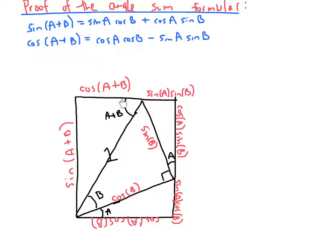Also, cosine of A plus B, which is this side length, is exactly the difference of this side length, cosine A cosine B, minus this side length, sine of A sine B. And that's the second angle sum formula. So I think that's a pretty great geometric proof of the angle sum formulas.